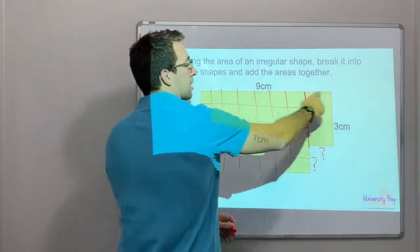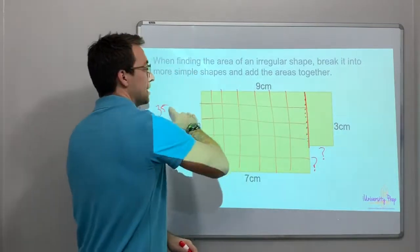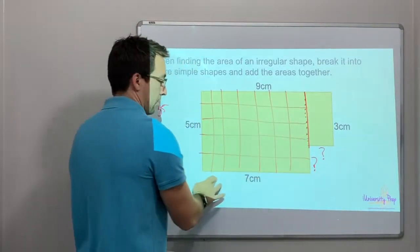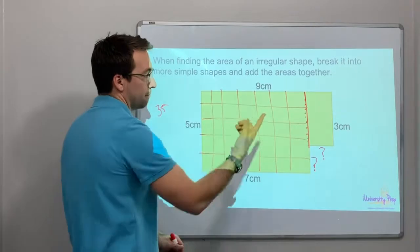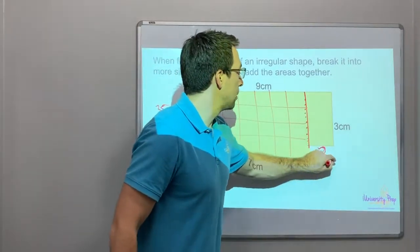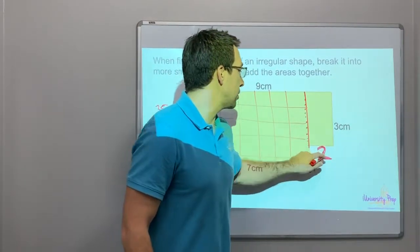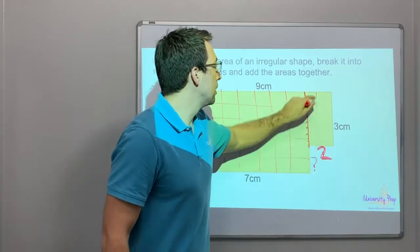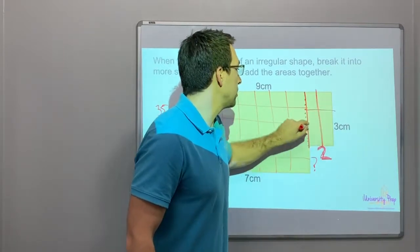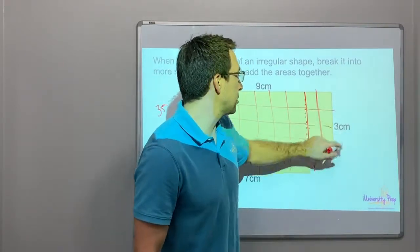But look, 9 is from top to top, or side to side. And this is only 7. So what is 9 minus 7? That's 2. Look, 9 minus 7, so 2. So you have 1, 2, and then 1, 2, 3. So that's 6. 2 times 3 is 6.